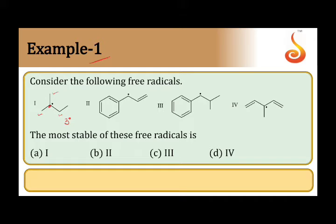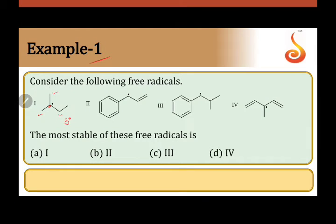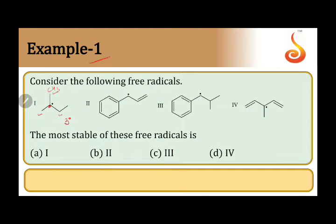The number of alpha hydrogens present here: we have a CH3 group here, also a CH3 group here, and here we have a CH2 group. If you write the condensed formula, then you can count the alpha hydrogens easily. So 8 alpha hydrogens are present, the effect is hyperconjugation.